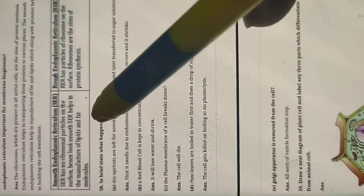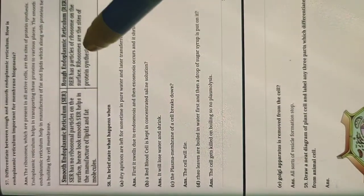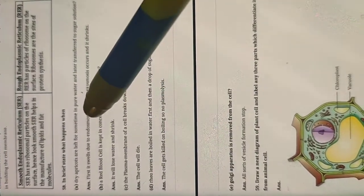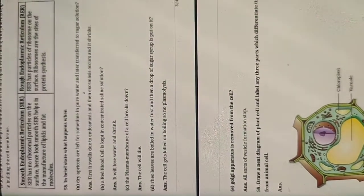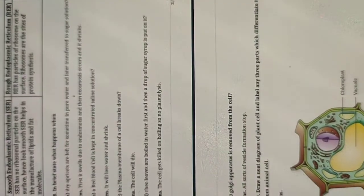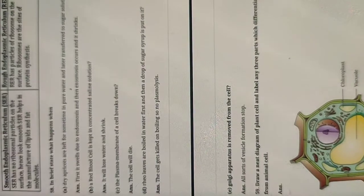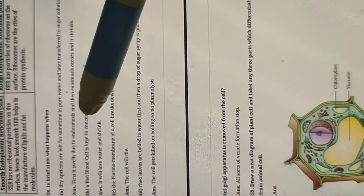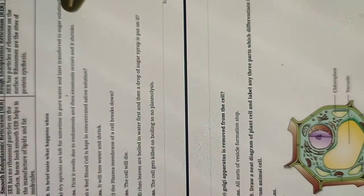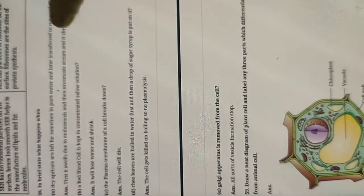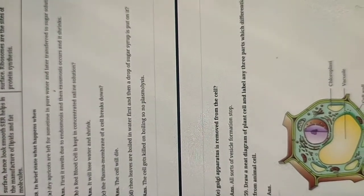In brief, state what happens when dry apricots are left in pure water and then transferred to sugar solution. Pure water means low solute concentration and 100% solvent concentration. First, the dry apricots swell due to endosmosis — water enters. Then when transferred to sugar solution, exosmosis occurs — water comes out — and the apricots shrink. This is related to hypotonic, hypertonic, and isotonic solutions.